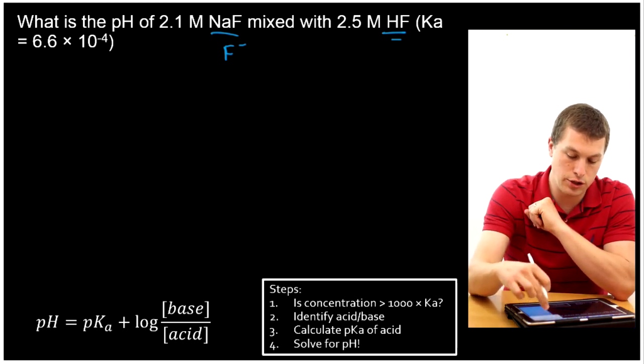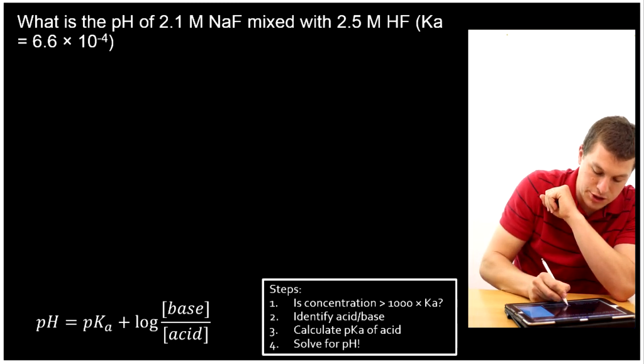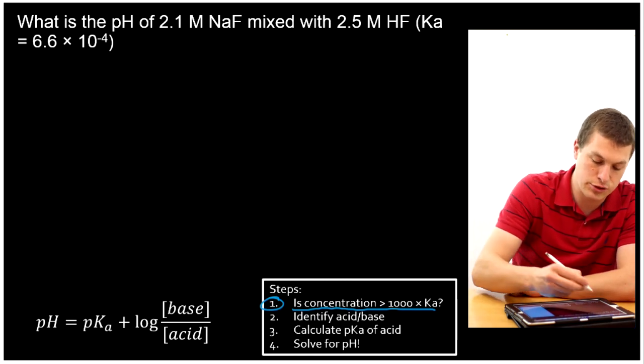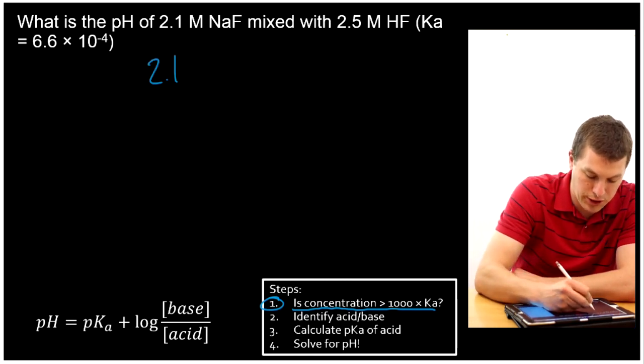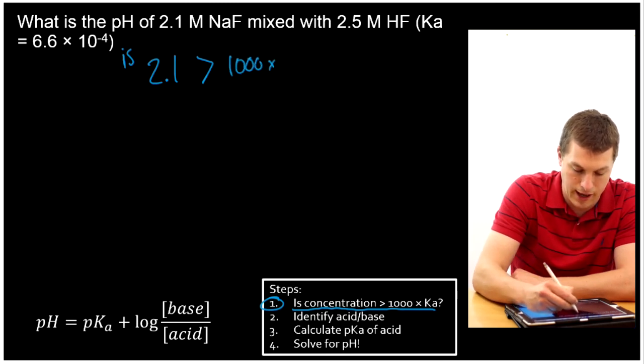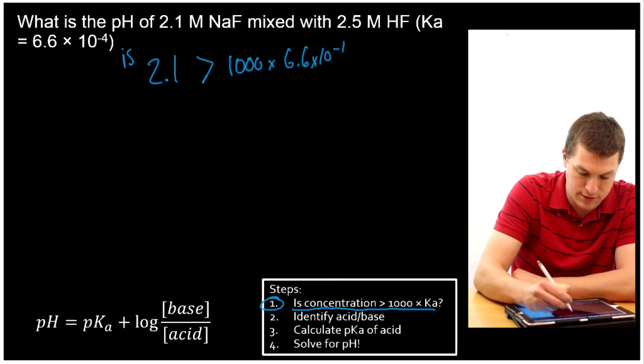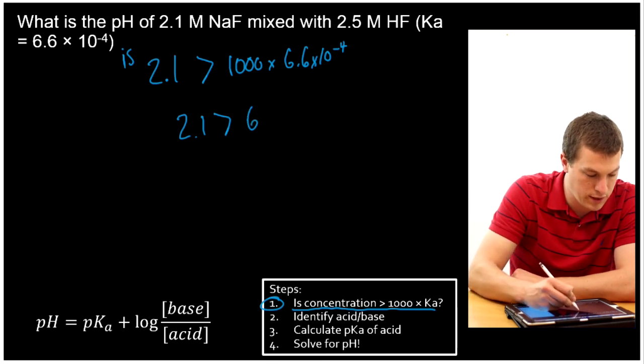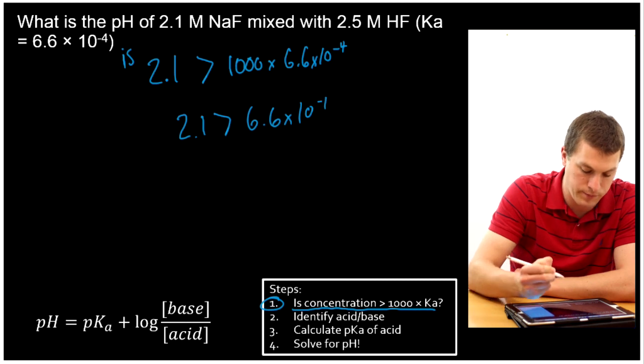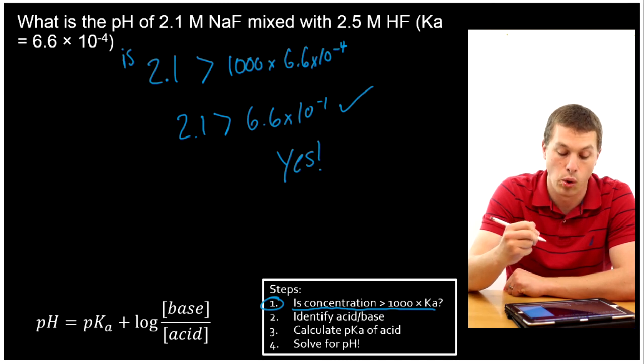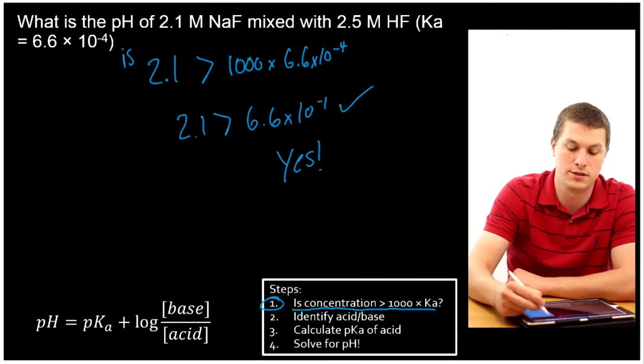So what are we going to do here to use the Henderson-Hasselbalch equation? We want to first make sure it's justified to use. That means we want to check that the concentration is greater than a thousand times Ka. Choose the smaller concentration, and we'll take 2.1. Is that 2.1 greater than a thousand times our Ka? Our Ka is 6.6 times 10 to the minus 4. That's 2.1, and the right-hand side gives us 6.6 times 10 to the minus 1, or 0.66. So yes, it is. Our concentration is more than a thousand times bigger than our Ka, and that means we can use the Henderson-Hasselbalch equation.